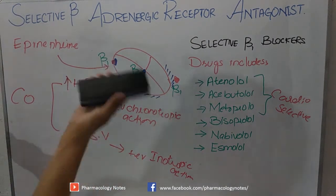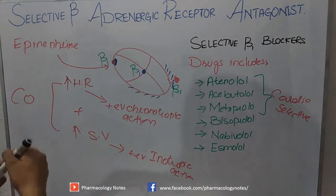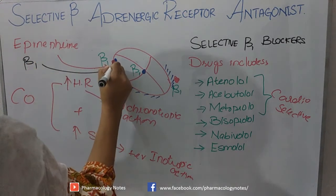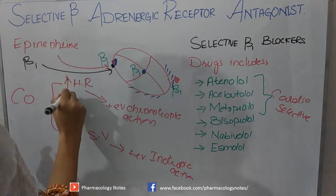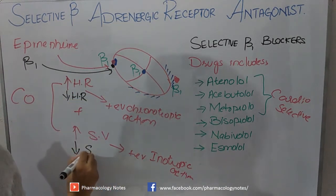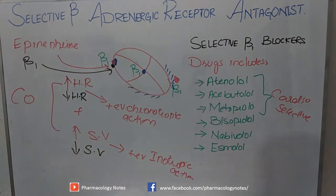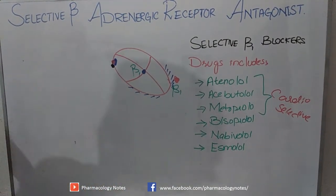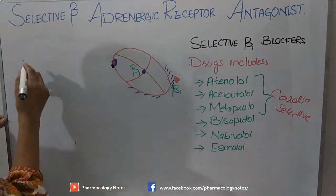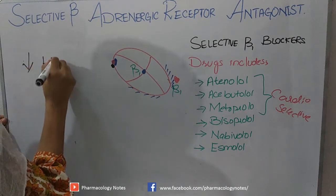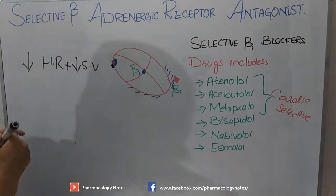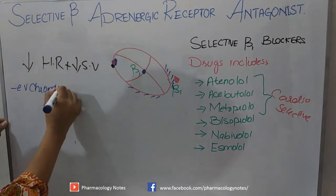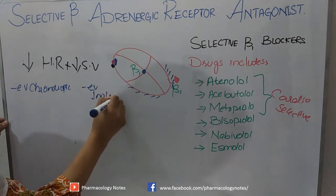Blockers do the opposite. Beta-1 selective blockers such as atenolol, acebutolol, or metoprolol bind to beta-1 receptors, decreasing heart rate — which is termed negative chronotropic action — and decreasing stroke volume — termed negative inotropic action. Thus, they decrease cardiac output.